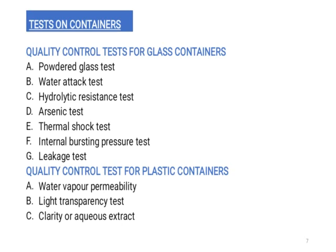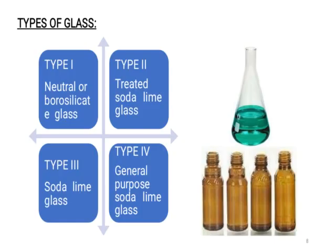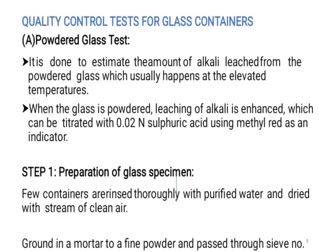The quality control tests for the glass container include: the powder glass test, water attack test, hydrolytic resistance test, arsenic test, thermal shock test, internal bursting pressure test, and leakage test. There are four types of glass: Type 1 is neutral or borosilicate glass, Type 2 is treated soda lime glass, Type 3 is soda lime glass, and Type 4 is general purpose soda lime glass.